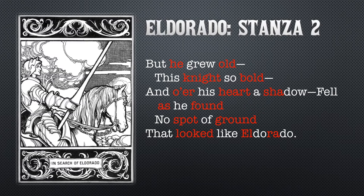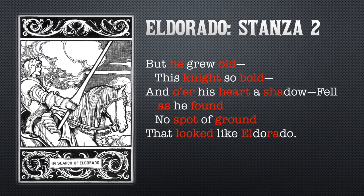He grew old. In the first stanza, we can imagine he is young, happy, excited — singing a song in daytime and in dark, searching for El Dorado, young and enthusiastic. In the second stanza, 'but he grew old, this knight so bold, and o'er his heart a shadow fell.' What does it mean that a shadow fell over his heart? In the first stanza he's excited and hopeful, but in the second stanza he is old. He has a shadow over his heart because he has not found El Dorado, even after many years of searching.